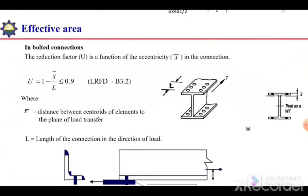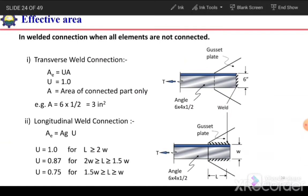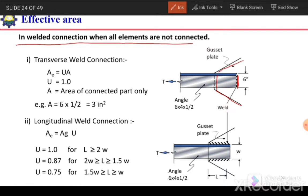To calculate the effective net area for welded connections: if a channel section is connected to a gusset plate with only a perpendicular (transverse) weld, we consider Ae = U × A where U = 1, but A equals only the area of the connected part — not the gross area.